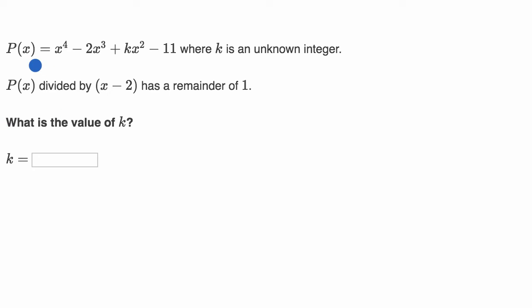We're told that P(x) equals all of this business, where k is an unknown integer. P(x) divided by x minus two has a remainder of one. What is the value of k? Pause this video again and see if you can work it out.